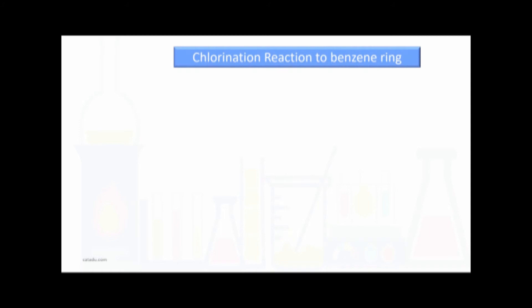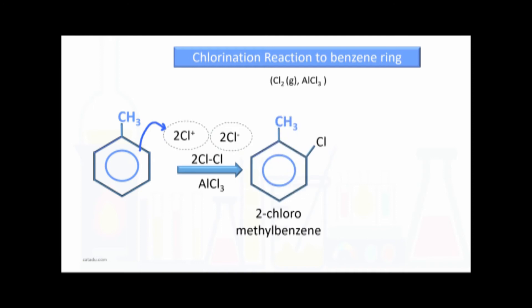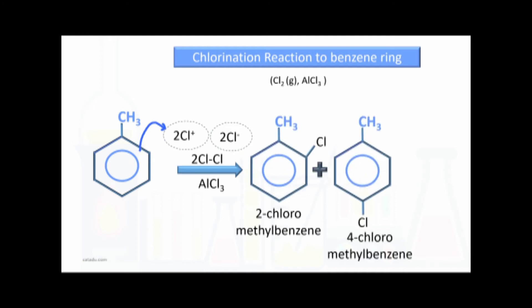The chlorination reaction at the benzene ring: the reagent is chlorine gas and aluminum chloride is the catalyst. Under these conditions, the electrophile Cl⁺ is formed, and the pi electrons of benzene are attracted towards Cl⁺. We get the products 2-chloromethylbenzene and 4-chloromethylbenzene. Hydrogen ions are released and another product, HCl, is formed.